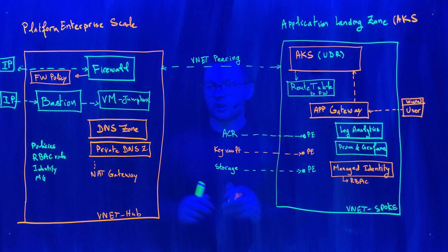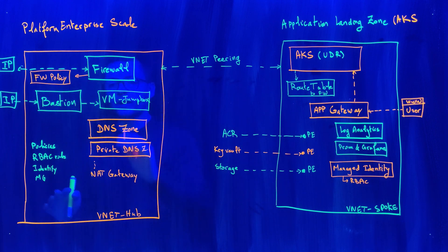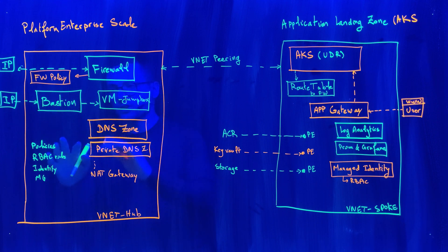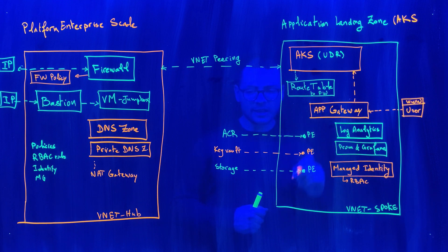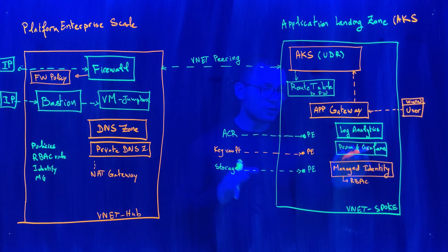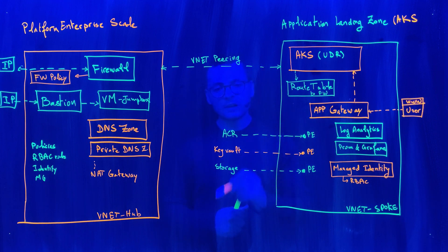In summary, implementing the enterprise scale involves two components: the platform enterprise scale, which implements foundational resources like the bastion, firewall, and DNS resolution; and the application landing zone, which implements the AKS landing zone containing the AKS cluster, route tables, application gateway for ingress, Log Analytics, Prometheus, managed identities, and private endpoints for the registry, Key Vault, and storage.